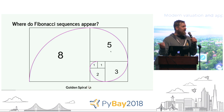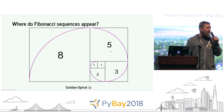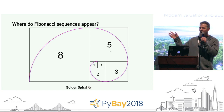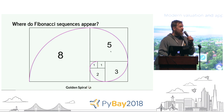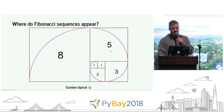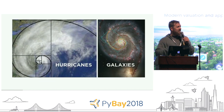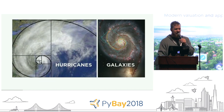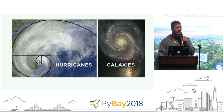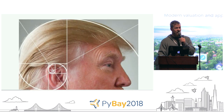Where do we see Fibonacci sequences? All over the place — all over math, including nature. We can see it in a shell, on bigger scales like hurricanes and galaxies, and also in unnatural contexts.